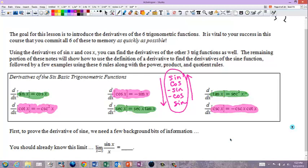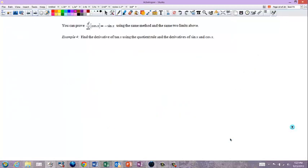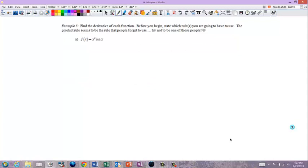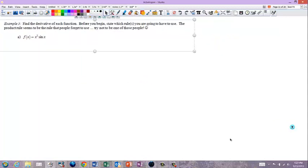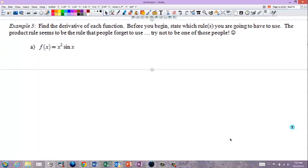And we're actually going to skip all the way to example 5, because examples 1 through 4 are just going through the proofs of those derivatives. If you want to see the proofs of them, go to chaoticgolf.com and click on this lesson in Mr. Leckie's. He goes through the proofs, and he does a brilliant job, and I'm not going to try to compete with him. So if you want to know, that's fine. If you don't want to know, you don't need to know them. It says find the derivative of each function. Before you begin, state which rules you're going to have to use. The product rule seems to be the rule that people forget to use. Try not to be one of those people.